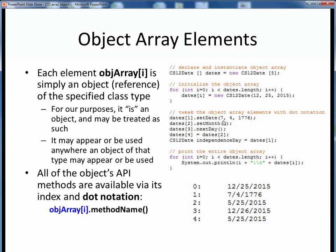We can set it to a specific date, change its month only, advance its date, perform assignment statements to it or with it, and so on. Then to see all the resulting dates, we simply iterate through the loop as always, and print each date element implicitly using its toString method.